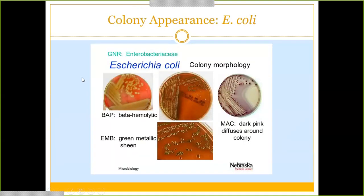E. coli shows beta-hemolysis on blood agar. On MacConkey agar — which is selective for gram-negatives and differential for lactose fermentation — E. coli is a lactose fermenter, so it produces purplish or pink colonies. Non-lactose fermenters produce clear colonies. If your lab uses EMB agar instead of MacConkey, E. coli will grow as a green metallic sheen on EMB, rather than the pink/purple coloring on MacConkey.